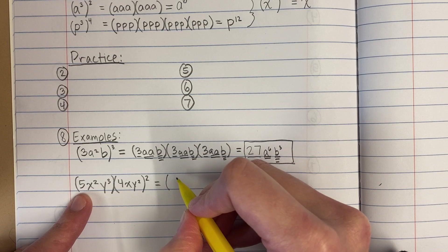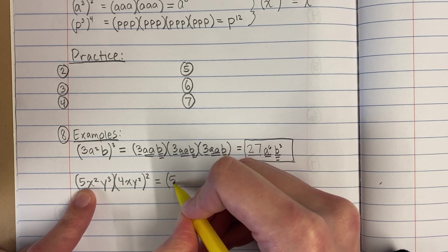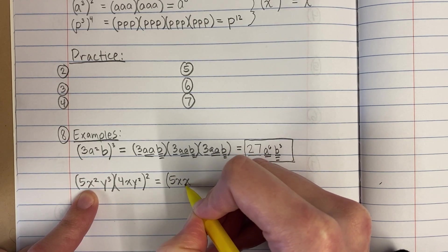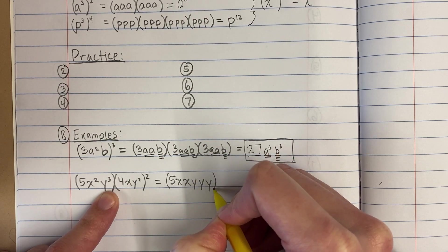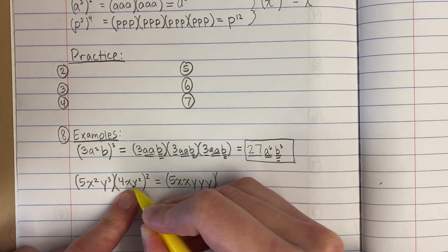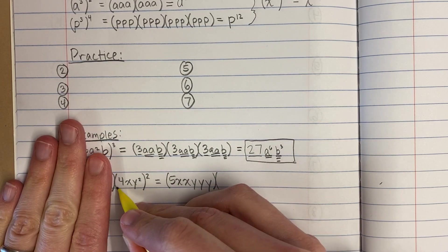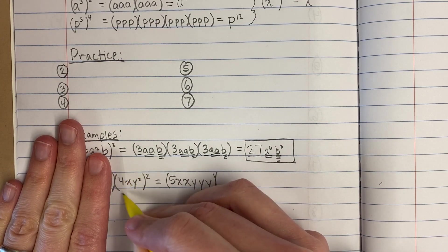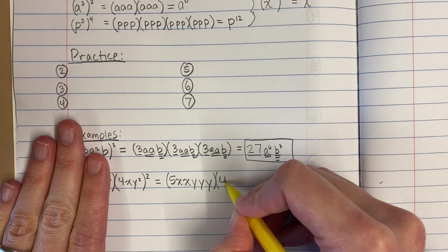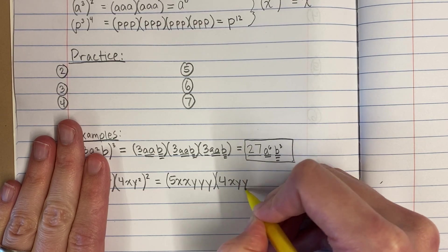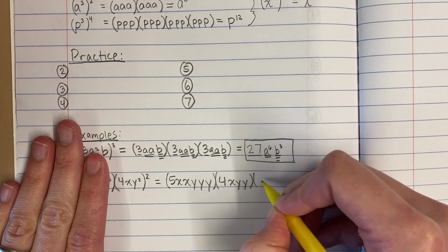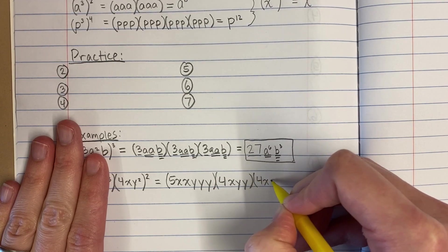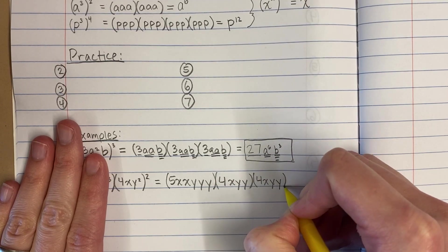Okay, so this is 5 times x times x times y times y times y times. Now look, this piece, this piece in parentheses is squared. That squared applies to this set of parentheses. So this is going to be 4 times x times y times y. That's what's inside here, right, because it's y squared. But that is being squared. That is being multiplied by itself twice.